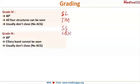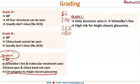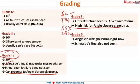Grade 3 is 30 degrees; the ciliary body is not visible, but the scleral spur, trabecular meshwork, and Schwalbe's line are seen — this angle also does not close. In grade 2, the scleral spur is not visible; only Schwalbe's line and trabecular meshwork are seen, and this patient can progress to angle closure glaucoma. Grade 1 has a very high risk of angle closure glaucoma, with only Schwalbe's line visible.